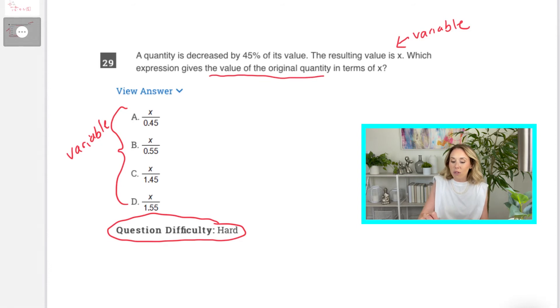So, since they want the value of the original quantity, we have to pick a number to start with for the original quantity. So, if we're dealing with percents, the best thing to start with is 100. It's easy to take 45% off 100. So, I'm going to make my quantity 100.